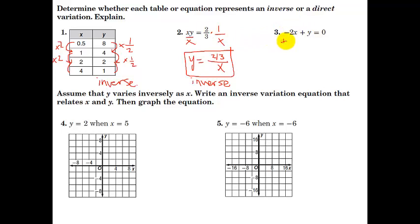Last one here, let's solve for y by adding two x to both sides. So here we get y equals two x. This is direct variation. You can tell because the equation is y equals kx, and k is two. So the first two are inverse, where one goes up, the other goes down.